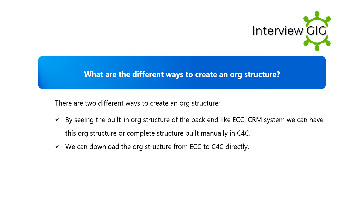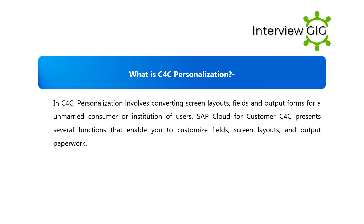What are the different ways to create an org structure? There are two different ways: by reusing the built-in org structure of the back-end system like ECC or CRM, or by building the complete structure manually in C4C. We can also download the org structure from ECC to C4C directly.